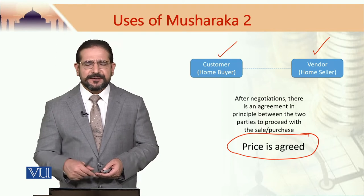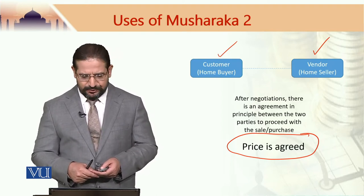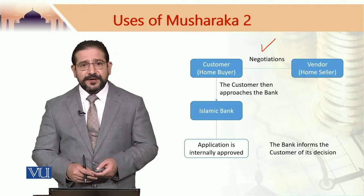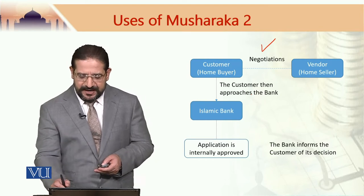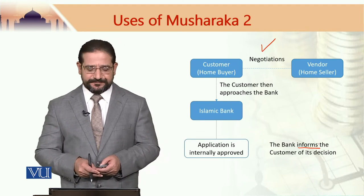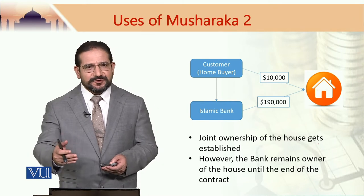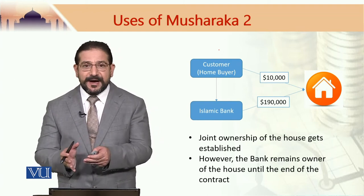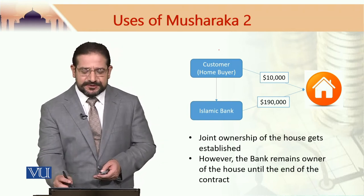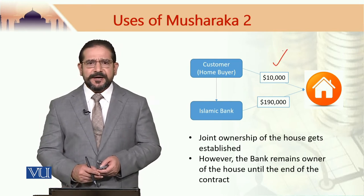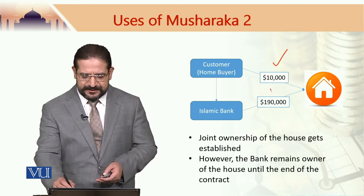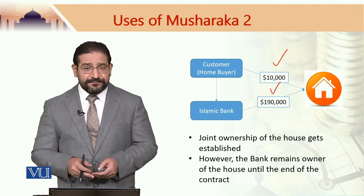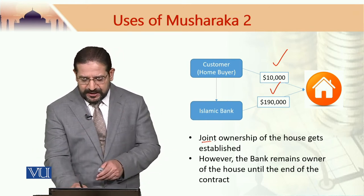After the negotiations, the customer approaches the bank for financing. If the customer's application is accepted, the bank informs the customer of its decision. If the transaction goes ahead, the customer and the Islamic bank jointly buy the house from the vendor. In this example, $10,000 are contributed by the customer and $190,000 are contributed by the Islamic bank, meaning the price of the house is $200,000.